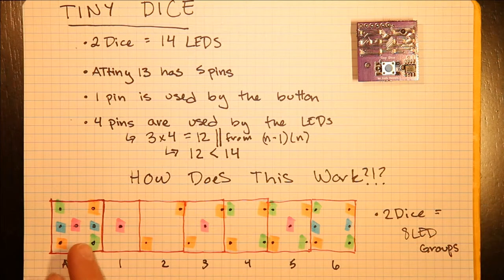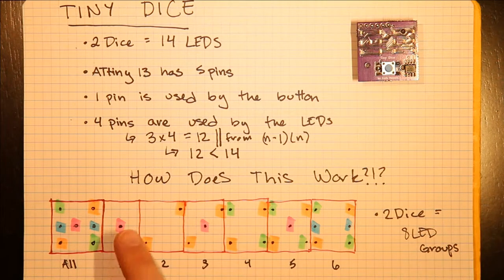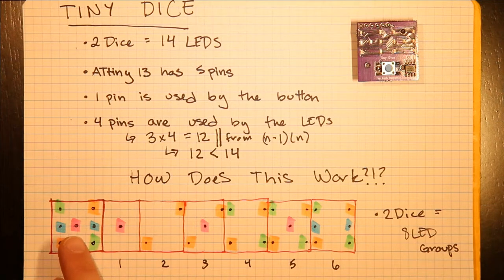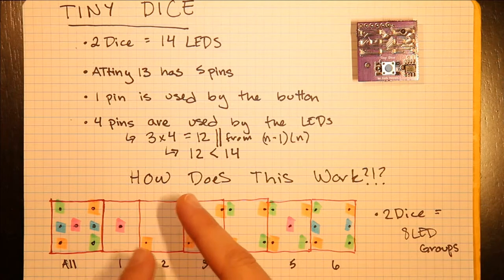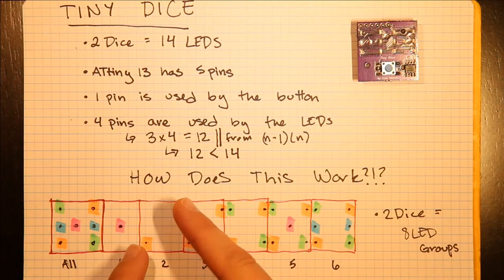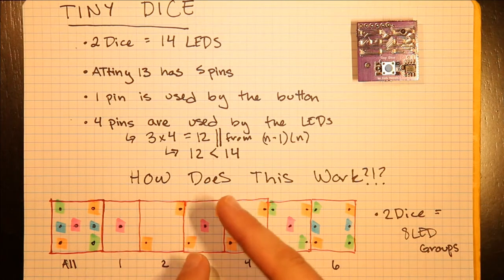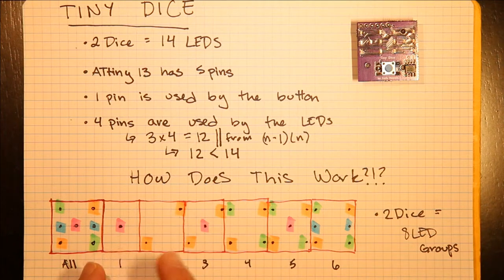Basically, you have all the LEDs in this image. For one, you only light up the center, but when you light up two, you light up these diagonal ones together. Three is just a combination of one and two.